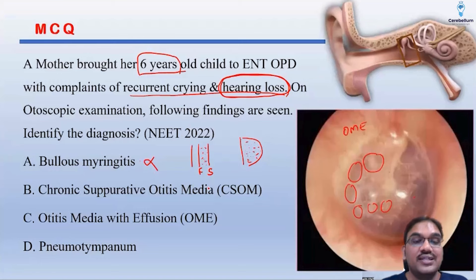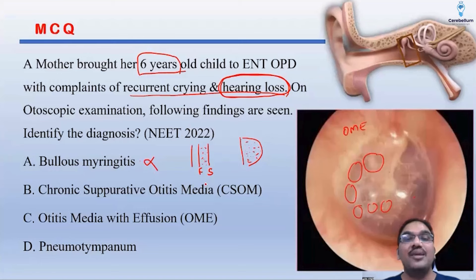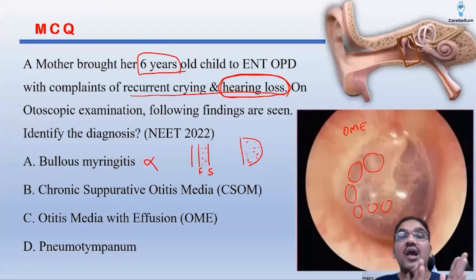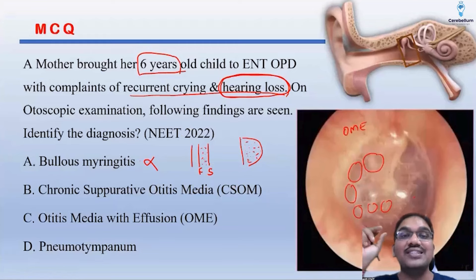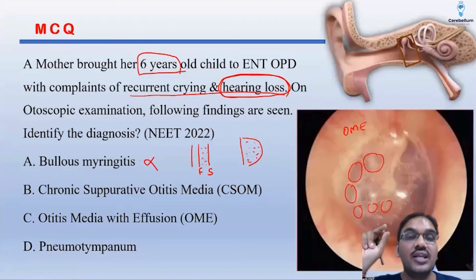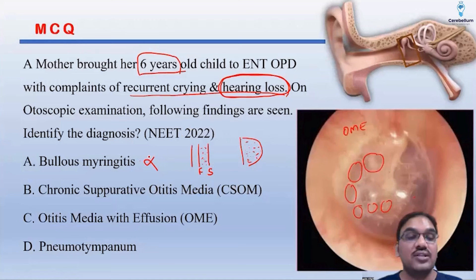CSOM means chronic suppurative otitis media. Repeated episodes of ASOM will lead to CSOM. In CSOM there will be persistent perforation. When does the acute change to chronic? If a perforation is staying persistent for more than 12 weeks, then you will call it chronic suppurative otitis media. There should be a persistent, non-healing perforation. That is CSOM.